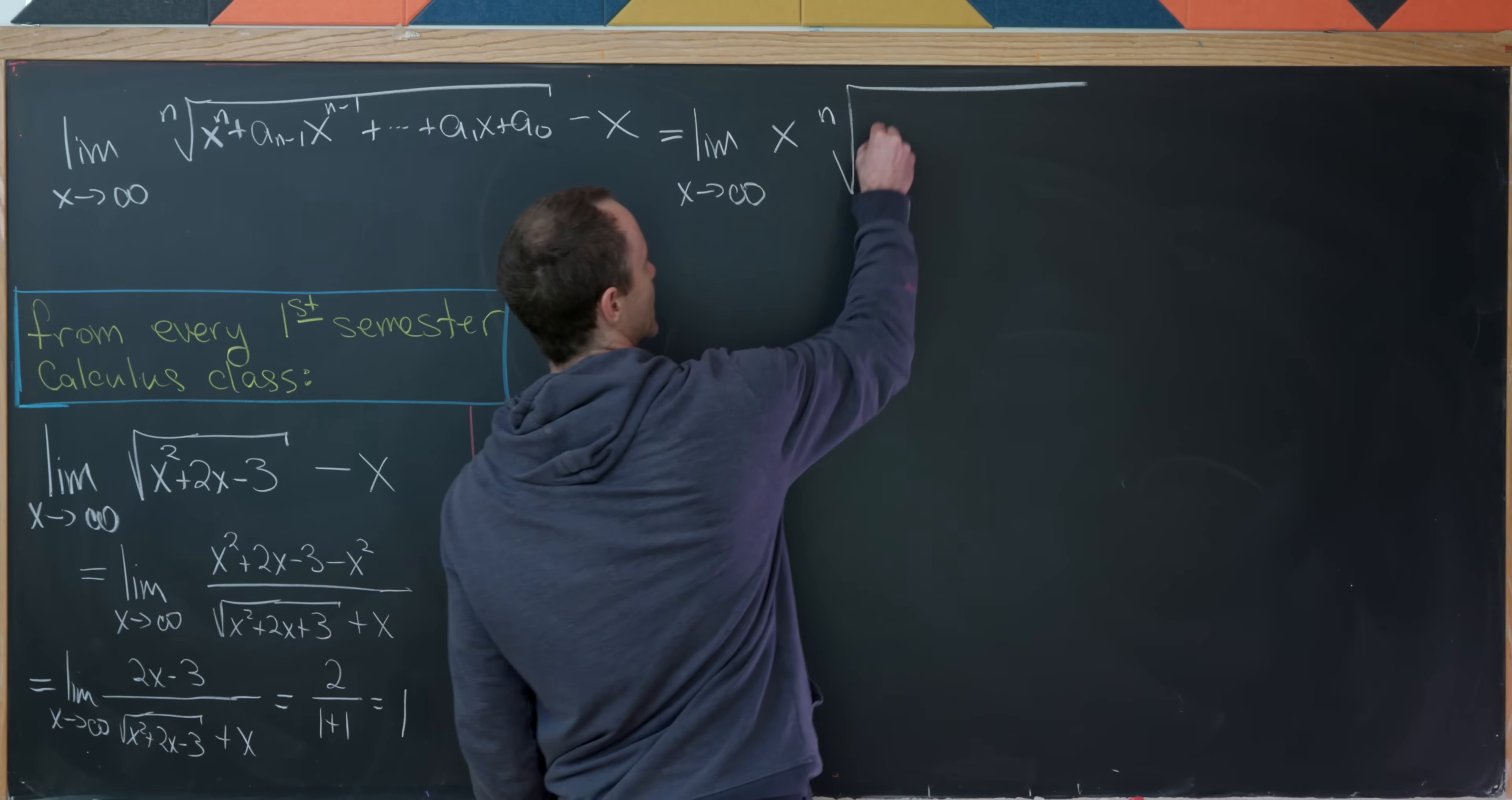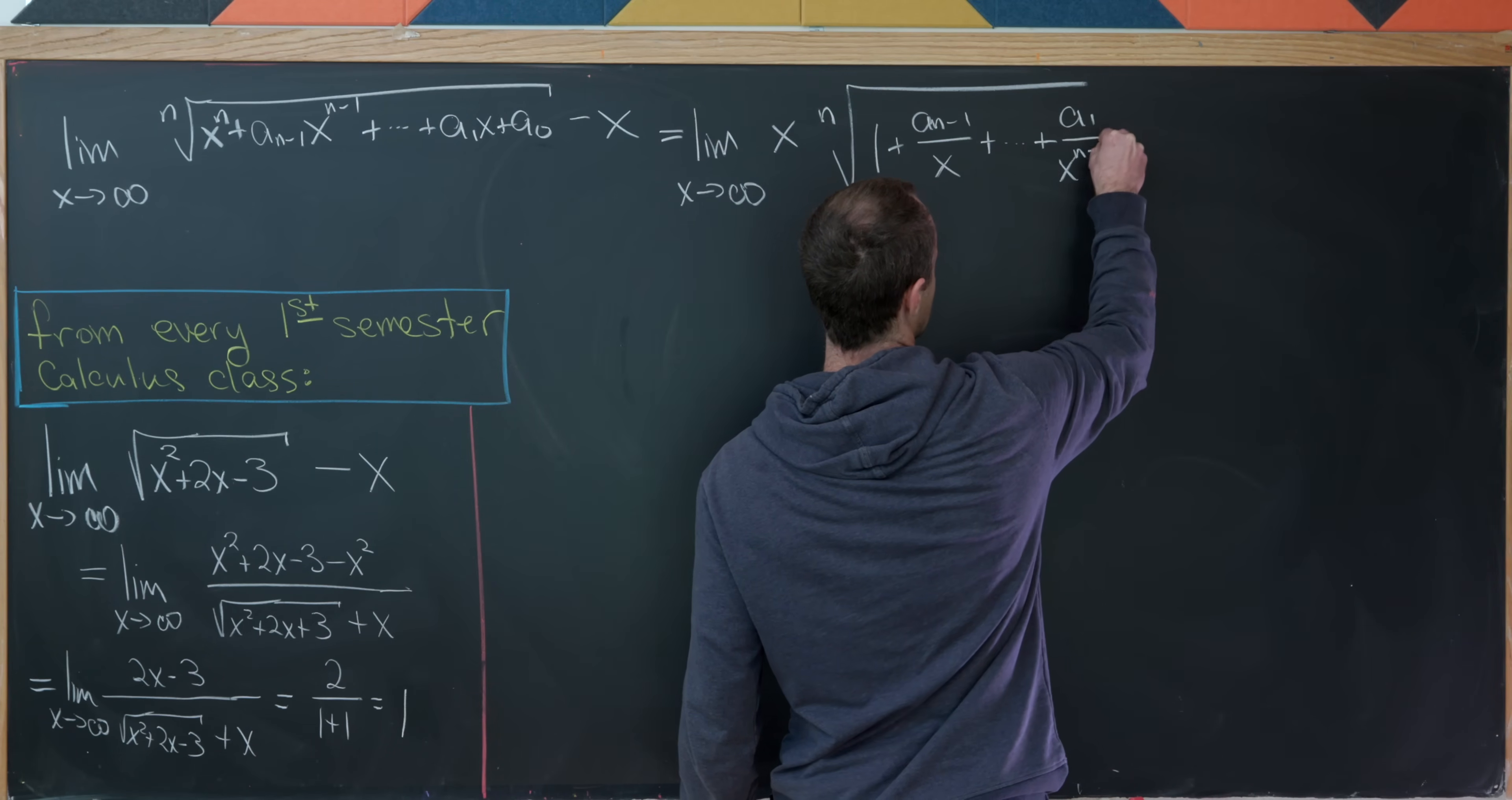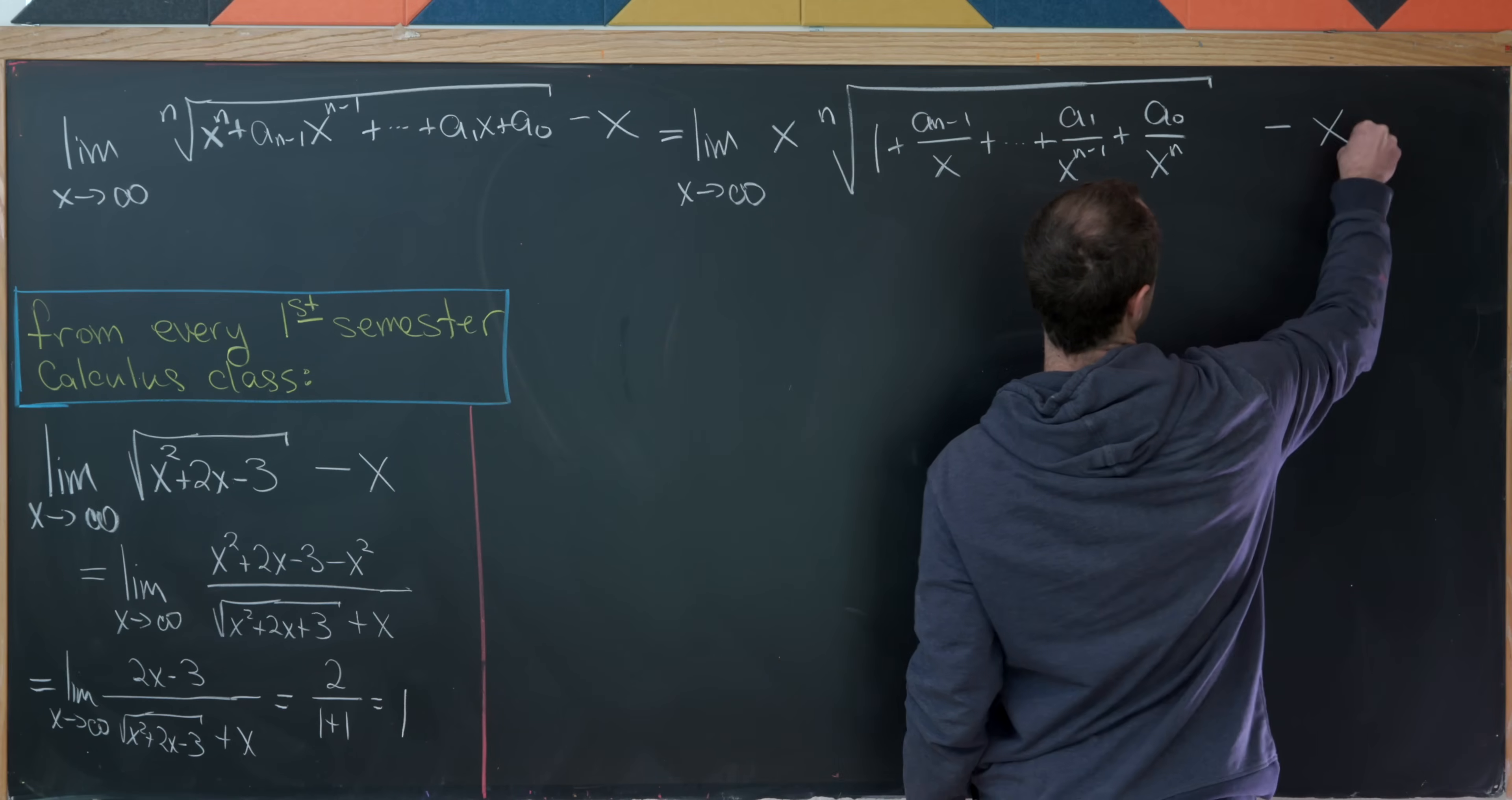So that's going to leave us with 1 plus a sub n minus 1 over x, plus all the way down to a1 over x to the n minus 1 plus a0 over x to the n. And then we have a minus x. So let's write that like this.